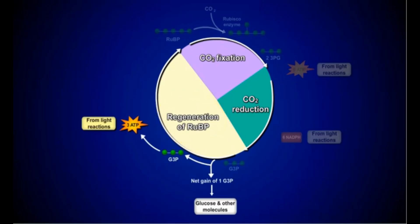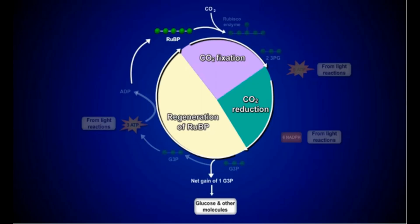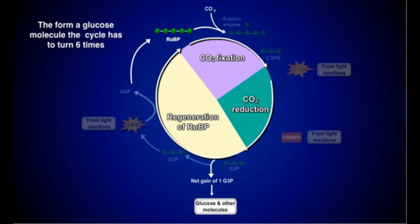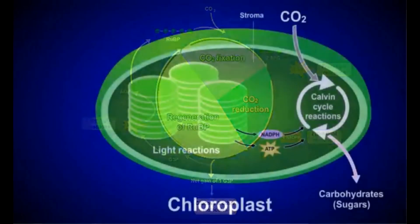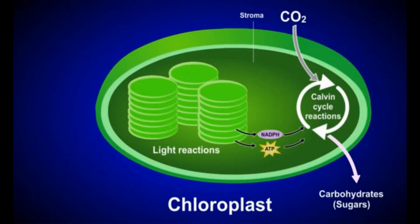The majority of the G3P molecules move forward into the third phase of the Calvin cycle. In this phase, ATP is used to combine the remaining G3P molecules to form RUBP molecules, which can then combine with additional carbon dioxide, continuing the carbon reactions. To form a glucose molecule, the cycle must turn six times because each turn adds only one carbon atom from the incoming carbon dioxide. The Calvin cycle is dependent on the light reactions to provide NADPH and ATP, which in turn provide the electrons and energy needed to form carbohydrates.